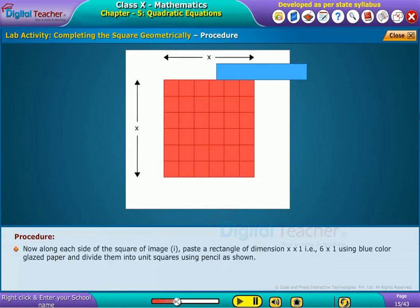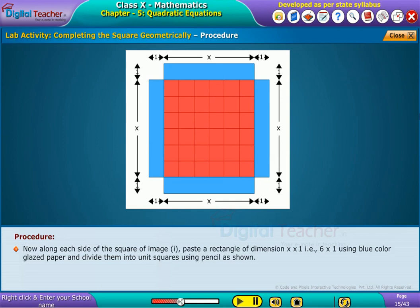Now along each side of the square of image one, paste a rectangle of dimension x by 1, that is 6 by 1, using blue color glazed paper and divide them into unit squares using pencil as shown.